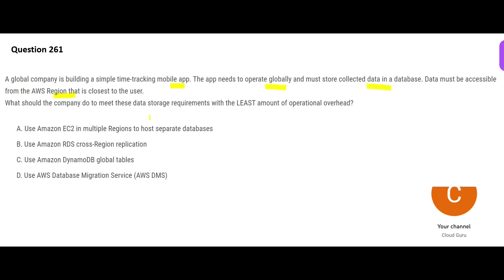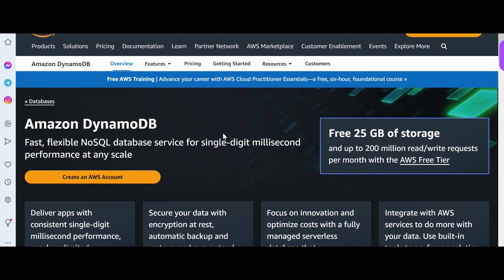The question asks what the company should do to meet the data storage requirement with least operational overhead. Cost is not the focus here — they want to minimize operational overhead. My indicators are: one, it is a mobile app; two, it is global; and three, they want a simple database. All of these are pointing to DynamoDB.